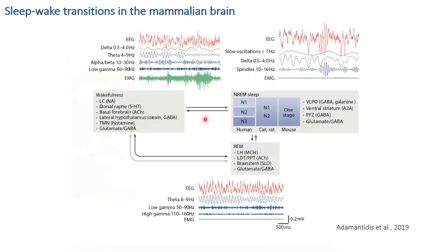The mammalian brain is daily switching between different brain states, defined experimentally by electroencephalographic recordings together with electromyography. These states are defined by specific electrophysiological oscillations peculiar to each brain state. During wakefulness, the EEG displays high frequency, low amplitude activity, while the EMG is very low amplitude. We observe a dominance of theta and gamma activity during wakefulness. Animals can then transition to non-REM sleep.